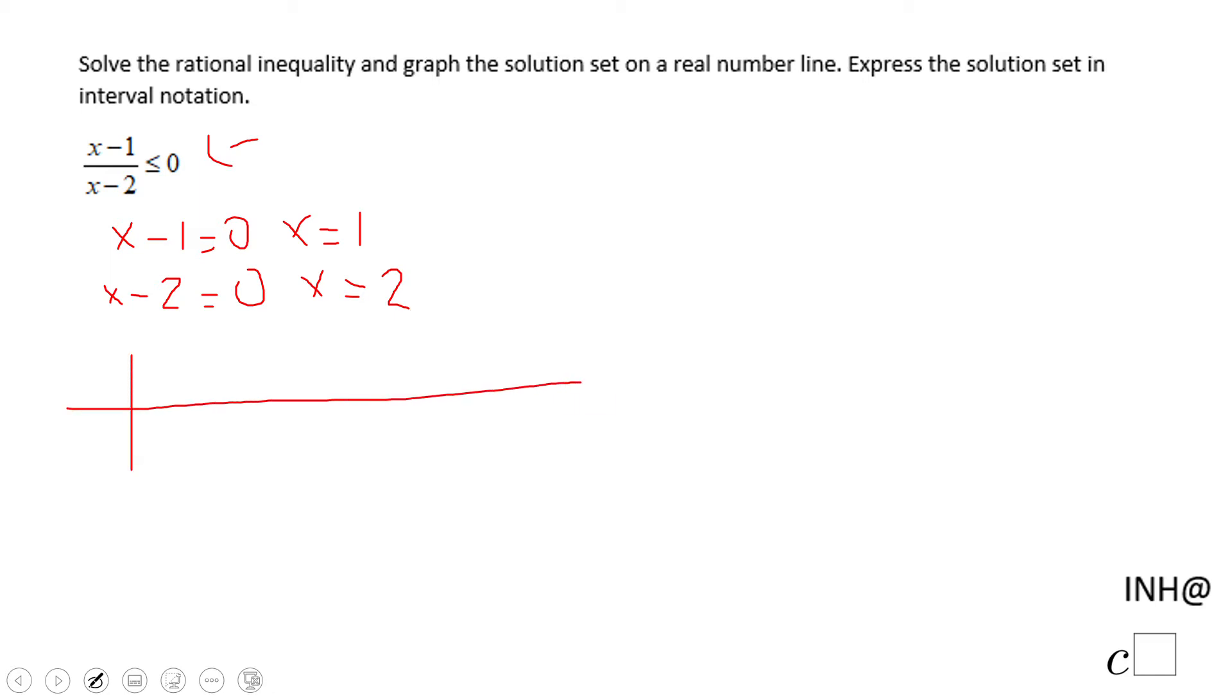Now we're going to use a sign table. I'm going to call this function f of x. On this table I'm going to put these two values we found. We have 1 and 2. When x is 1, the numerator is 0, so the whole fraction is 0. When x is 2, that would be a problem because the denominator is 0, which means the function is undefined.